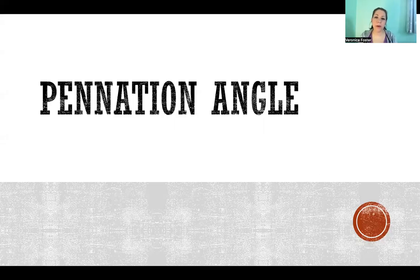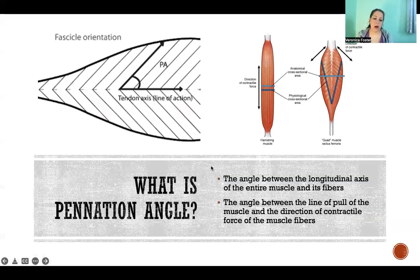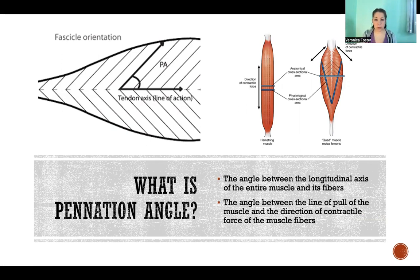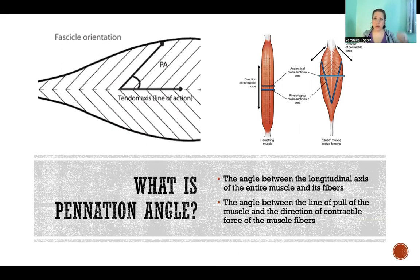Hello, in this video I'm going to tell you about penation angle and how it affects the force generating capacity of a muscle. So what is the penation angle? We're referring to the angle between the longitudinal axis of the entire muscle and its fibers. When we talk about the longitudinal axis, what we mean is a straight line from insertion to insertion of that muscle — the line of pull. If we draw a straight line from tendon to tendon, that's the line of pull and that's what we refer to as the longitudinal axis of the muscle.